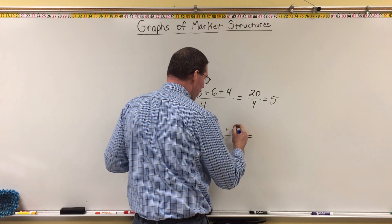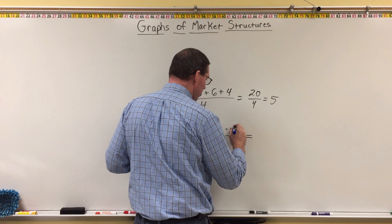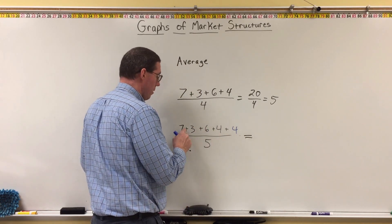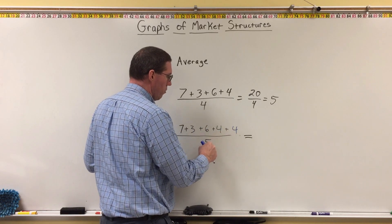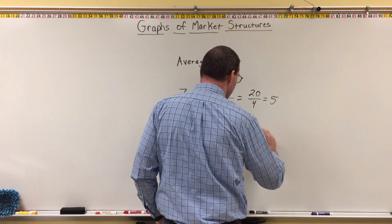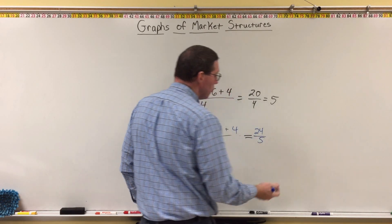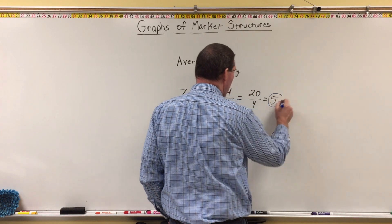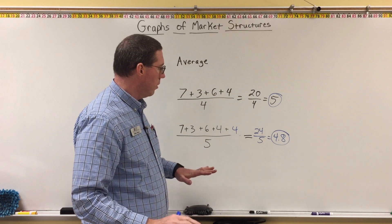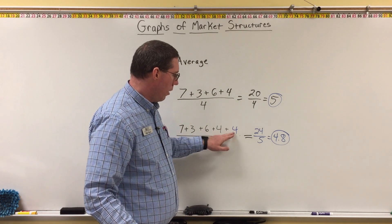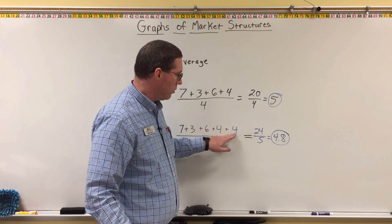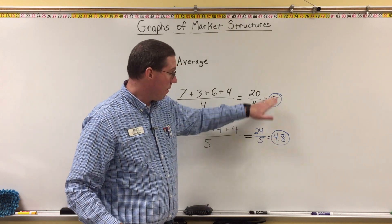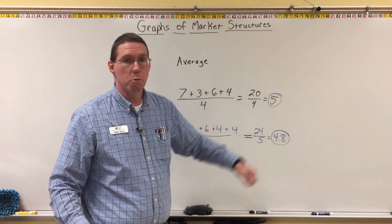But if we put in a number that is smaller — for example, 4 — we're going to get a decimal. So we've got 20, plus 4 is 24, and 24 divided by 5 is 4.8. And 4.8 is smaller than 5. So it's important to understand that when you add another number to an average: if that new number is smaller than your previous average, the average will go down; if it's the same, the average stays the same; and if it's larger, the average will go up.